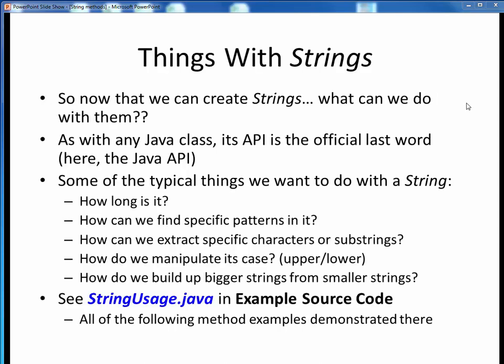So now that we've seen how to create string objects, what can we do with them? Note that from this point forward, I'll probably be referring to string objects and strings interchangeably. As always, the Java API is the ultimate reference on what can be done with strings. But as we'll see later, it's got a lengthy list of methods. So we need to focus on some of the key things we want to be able to do with strings.